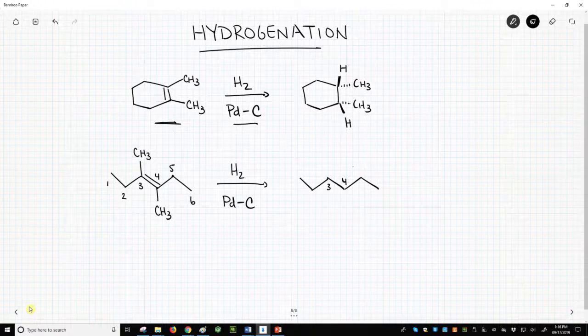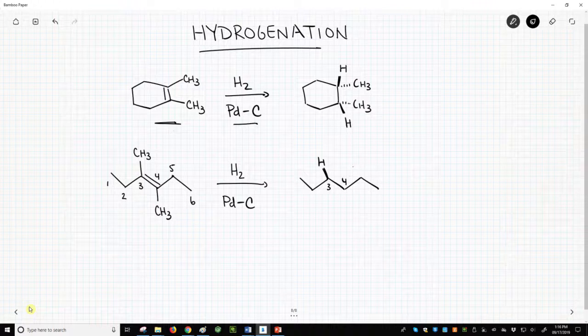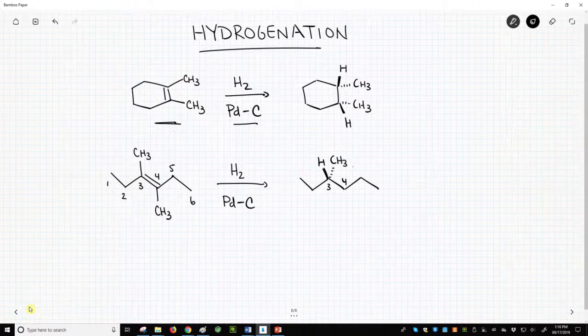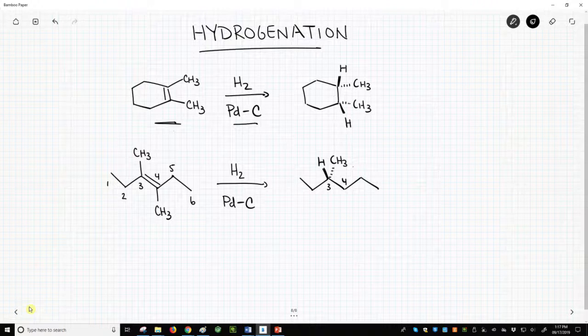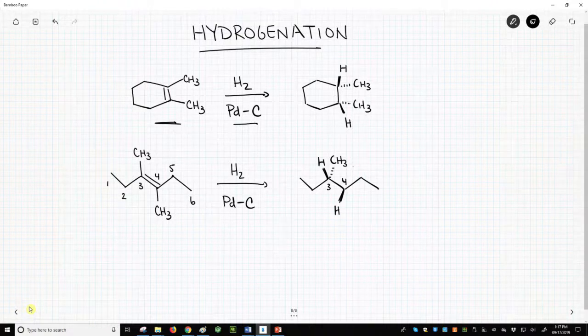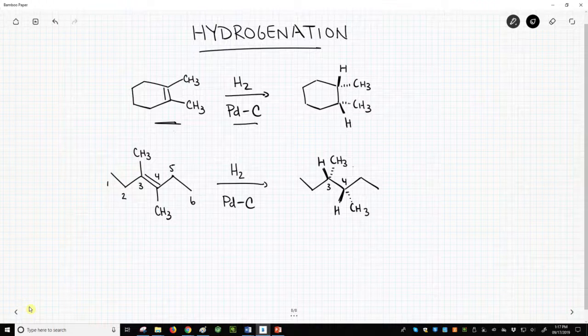On carbon 3, we know we're going to add the hydrogen up. This means the methyl on carbon 3 will be down. The same is true for carbon 4. The hydrogen will be up, and the methyl group will be down.